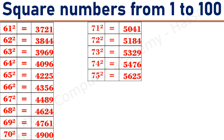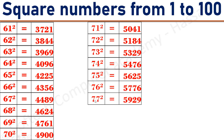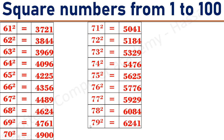75 square equals 5625. 76 square equals 5776. 77 square equals 5929. 78 square equals 6084. 79 square equals 6241.